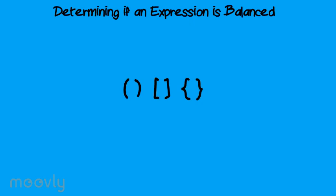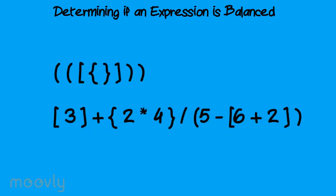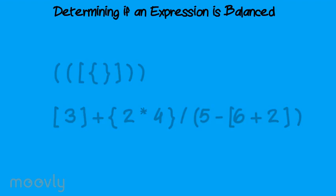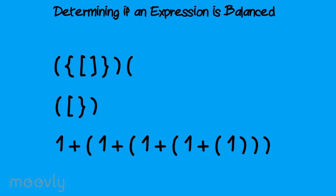Determining if an expression is balanced. When determining if an expression is balanced, the only tokens that we need to pay attention to are the parentheses, brackets, and braces. An expression is balanced if each parenthesis, bracket, and brace is matched by a closing parenthesis, bracket, or brace. These two expressions are examples of balanced expressions — note that each parenthesis has a closing parenthesis to match it, as do the brackets and braces. These expressions, on the other hand, are not balanced. The first is missing a closing parenthesis. The second has the proper number of braces, brackets, and parentheses, but is mismatched. And the third is also missing a closing parenthesis.